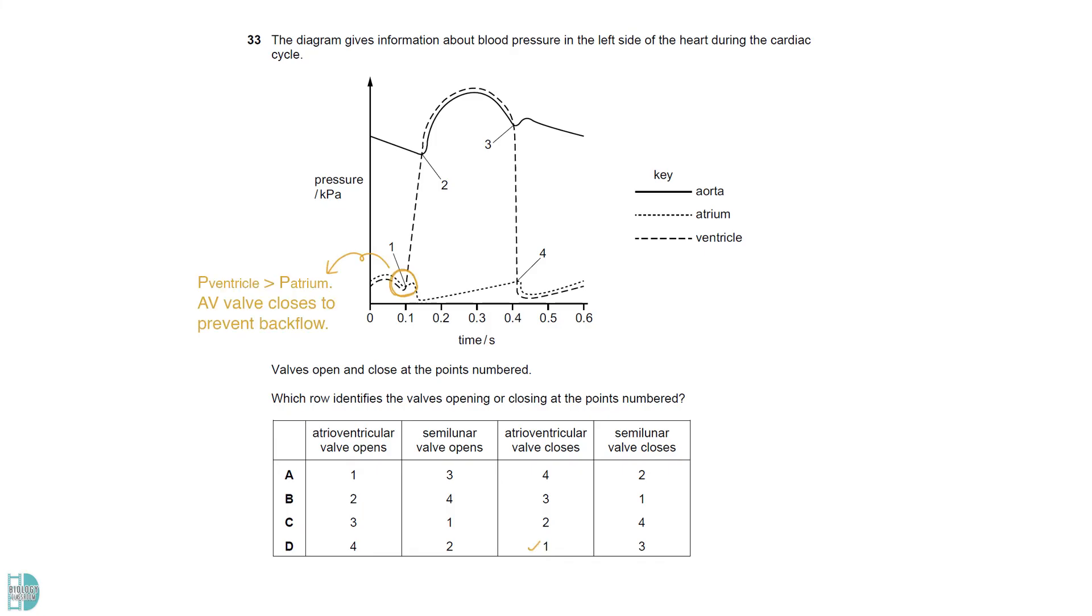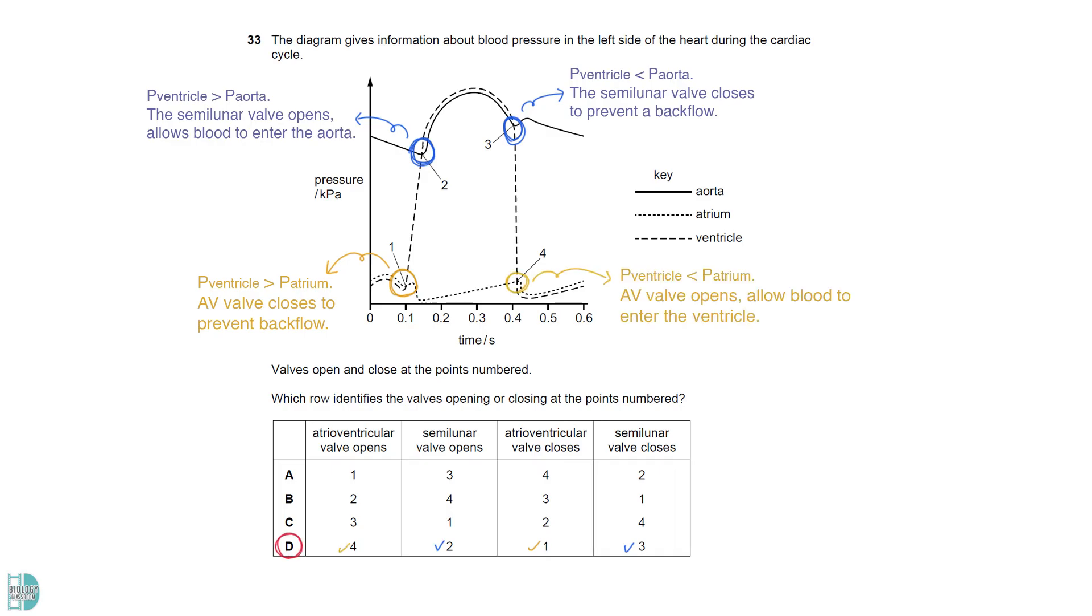1 is when the pressure in the ventricle exceeds the pressure in the atrium. AV valve closes to prevent backflow. 2 is the point where the pressure in the ventricle becomes higher than the aorta. The semilunar valve opens to allow blood to move out from the ventricle to the aorta. 3 is when the pressure of the ventricle drops below the pressure of the aorta. The semilunar valve must close to prevent a backflow. At 4, the pressure in the ventricle starts to become lower than that of the atrium. AV valve opens to allow blood to enter the ventricle from the atrium.